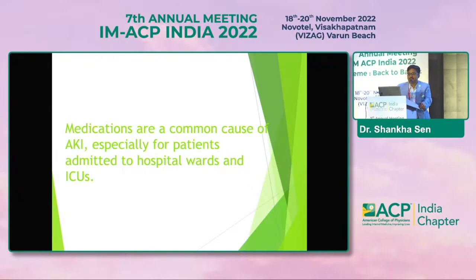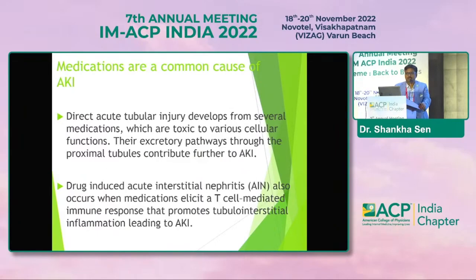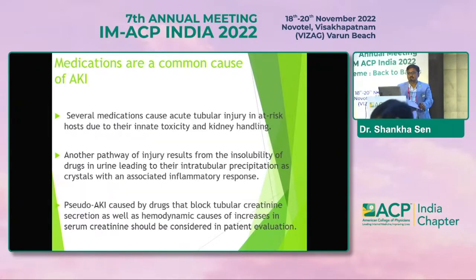Medications are a common cause of AKI, especially for patients admitted to hospital wards and ICUs. Medications can cause injury by various mechanisms. Direct acute tubular injury develops from medications toxic to various cellular functions. Drug-induced acute interstitial nephritis occurs when medications elicit a T-cell-mediated immune response that promotes tubulointerstitial inflammation. Another pathway results from insolubility of drugs in urine, leading to intratubular precipitation and crystal formation with an associated auto-inflammatory response.